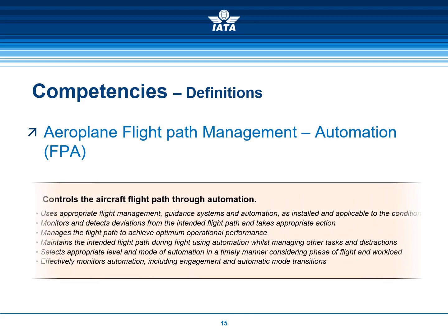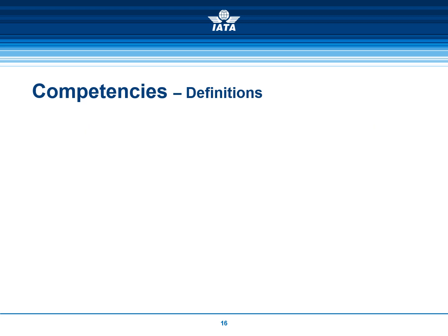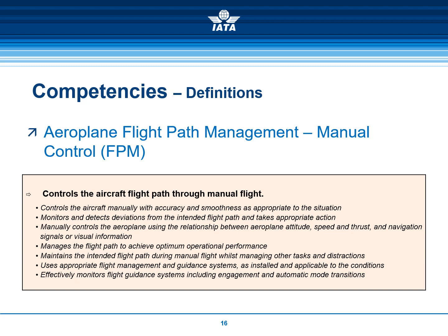The observable behaviors of the Aeroplane Flight Path Management Automation competency reflect best practices regarding automation policy, such as the use of the proper level of automation, taking action when things go unexpected, and understanding the flight mode annunciator at all times. The Aeroplane Flight Path Management Manual competency is defined as controlling the aircraft flight path through manual flight. Please have a look at the observable behaviors.